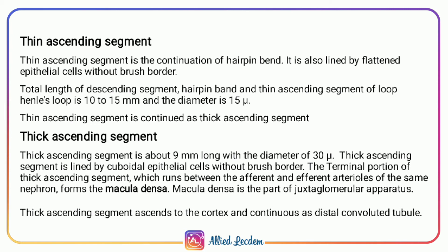The thin segment is continued as the thick ascending segment. The terminal portion of the thick ascending segment between the afferent and efferent arterioles of the same nephron forms the macula densa. The macula densa is part of the juxtaglomerular apparatus. The thin ascending segment is 9 millimeters long with a diameter of 30 micrometers, lined by cuboidal epithelial cells without brush border. In this segment, water is impermeable but there is active reabsorption of sodium and chloride.